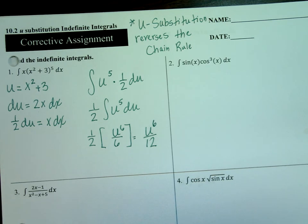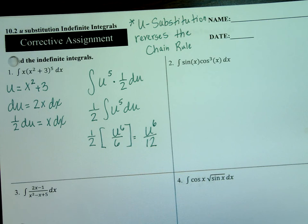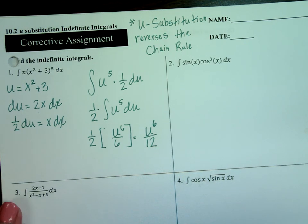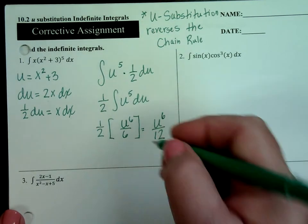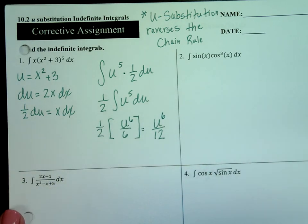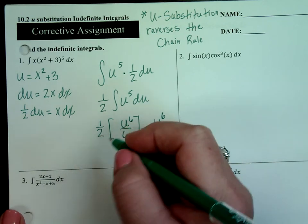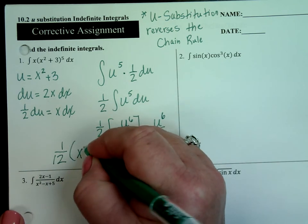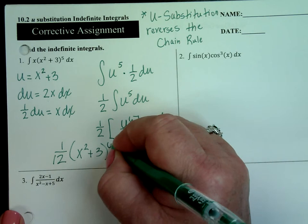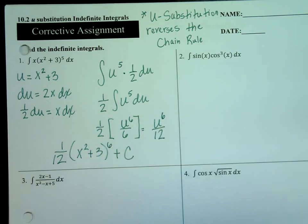My first question is: am I done? No — before I put the plus c, and you are correct about the plus c, I've got to substitute back what u is. So the final answer is one-twelfth of x squared plus 3 to the 6th power, plus c. And that, my friends, is the integral using u-substitution.